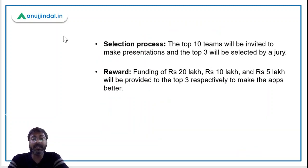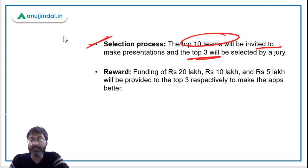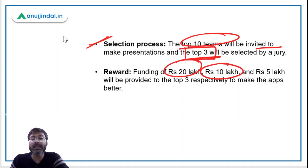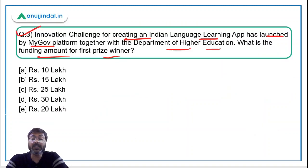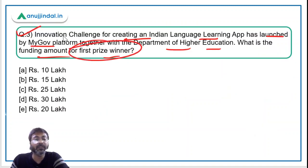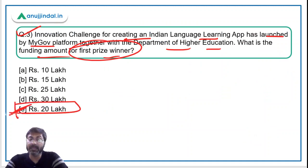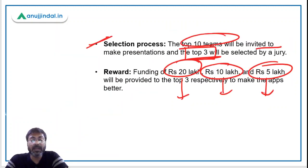Under the selection process, the top 10 teams will be invited to make presentations, and the top three teams will be selected by a jury. These top three teams will get funding of rupees 20 lakh, 10 lakh, and 5 lakh respectively. So the first prize winner will get rupees 20 lakh, the second will get 10 lakh, and the third will get rupees 5 lakh. Therefore, the correct answer is Option E: rupees 20 lakh.